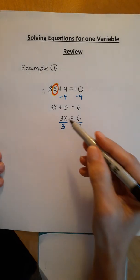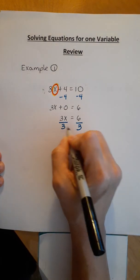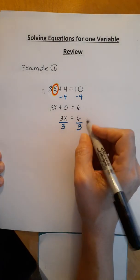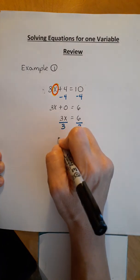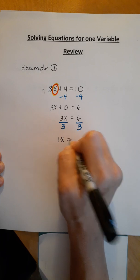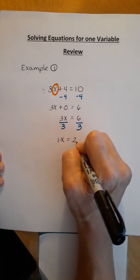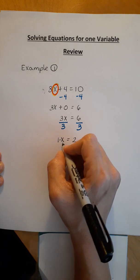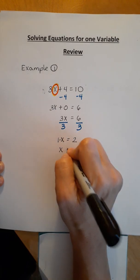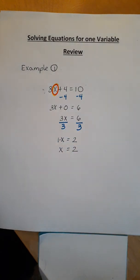That gives me 3 divided by 3, that's the multiplication property of equality. 3 divided by 3 is 1 times x equals 6 divided by 3, which is 2. Now 1 times x, the multiplication identity is x equal to 2. And there's our answer.